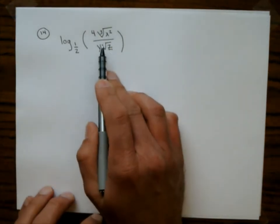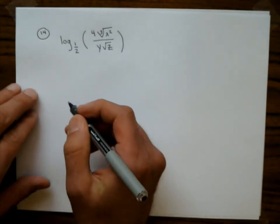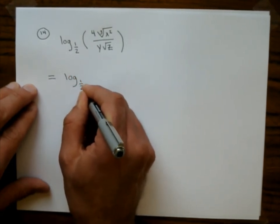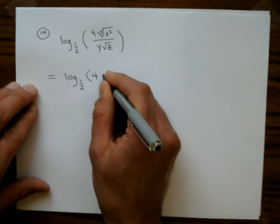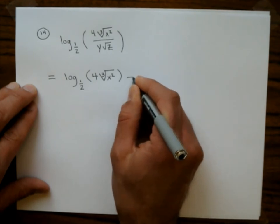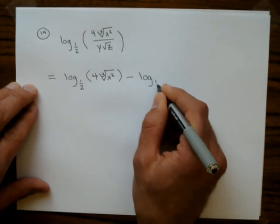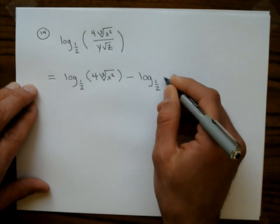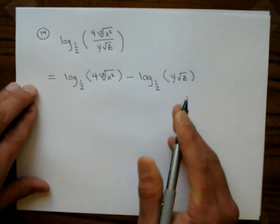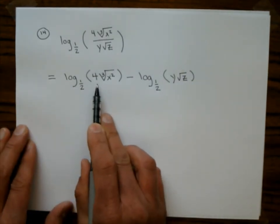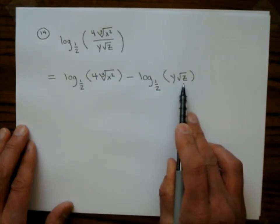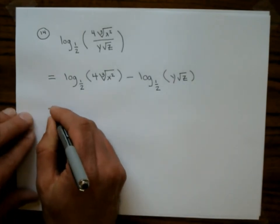The big picture here is a quotient, so I'm going to use the quotient rule. This gives log base 1/2 of (4 times the cube root of x squared) minus log base 1/2 of (y times the square root of z). Now we see products inside each log, so I'll use the product rule on both of those.